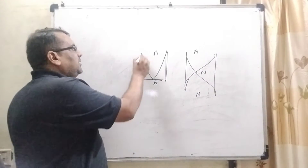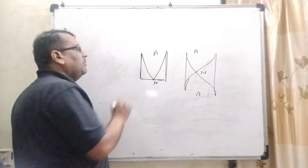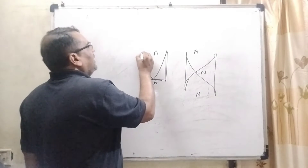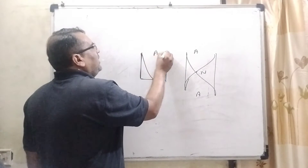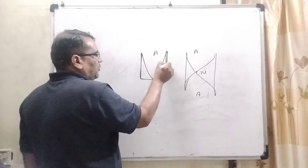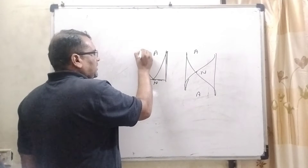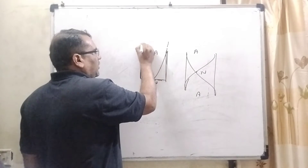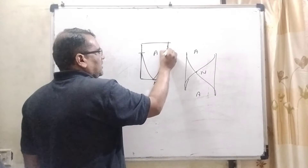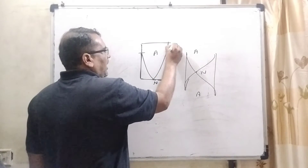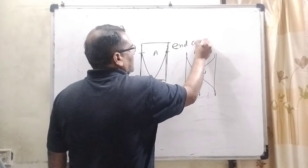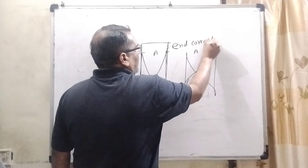But a scientist named Rayleigh stated that the antinode is not formed exactly at the end of the tube — it forms some distance above the end. This distance is called the end correction.